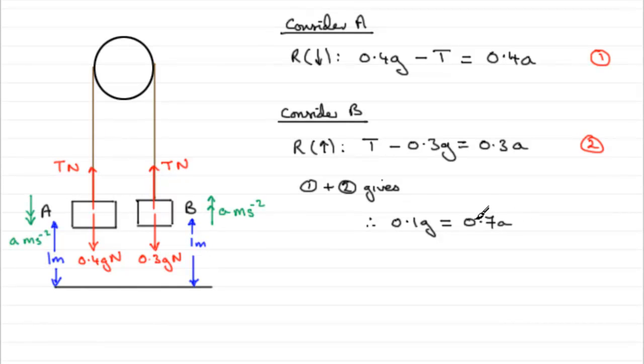Now, if we divide both sides by 0.7, we therefore have that A equals 0.1G, all divided by 0.7. And that works out exactly at 1.4 meters per second per second, taking G to be 9.8. So, we've got 1.4 meters per second per second.